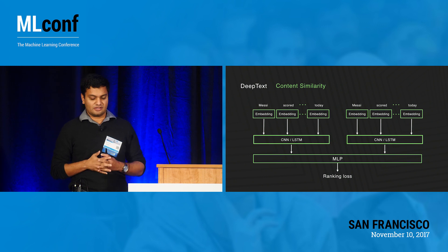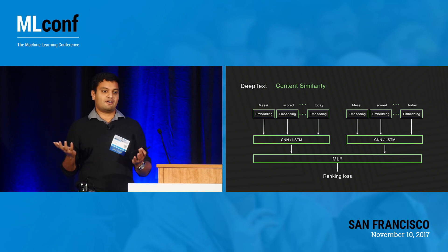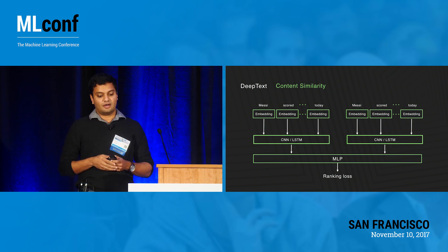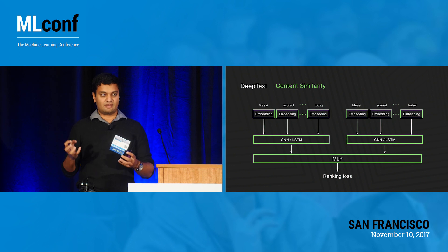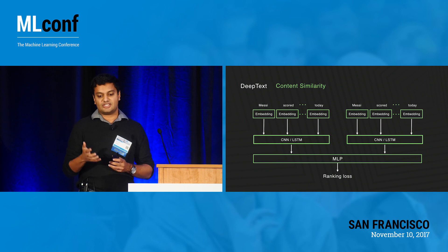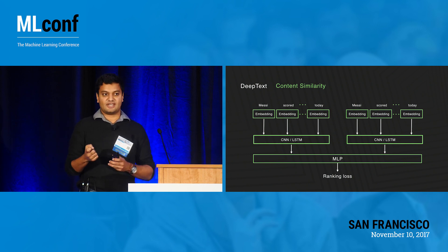This is one of my favorite models — what we call the two-tower model. For content similarity, something that works really well is: if you have two pieces of text, run both through a CNN or LSTM, take the hidden representations, put them into a single softmax, and add a ranking loss on top. This gives state-of-the-art performance in figuring out semantic similarity between two pieces of text, as opposed to just syntactic or word-level similarity.